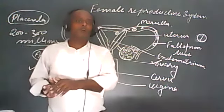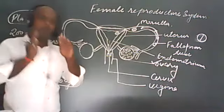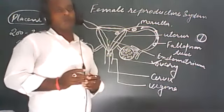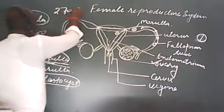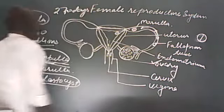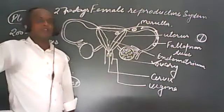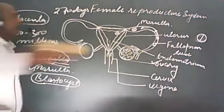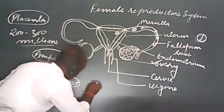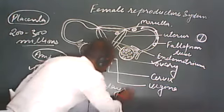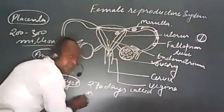There is a proper time period of pregnancy in women, which is near about 270 days. This time period of 270 days is called the gestation period.